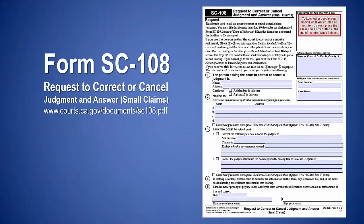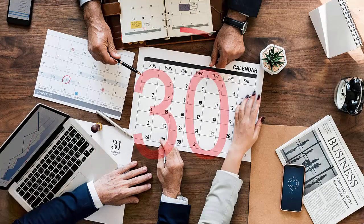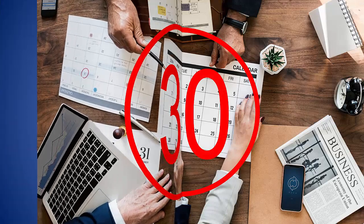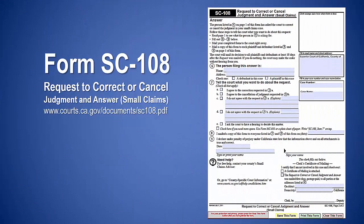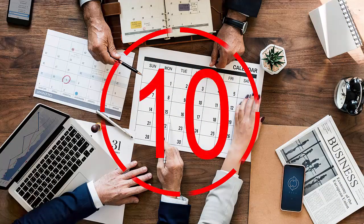To correct or cancel a small claims judgment, complete form SC-108. File this form if a clerical error was made or if the court applied the wrong law. File it within 30 days from when the clerk mailed the notice of entry of judgment. The clerk will mail the form to all other parties in the case, and the other parties will have ten days to file a response.